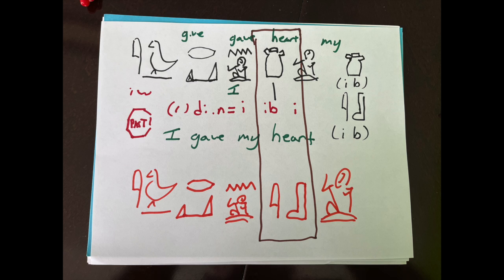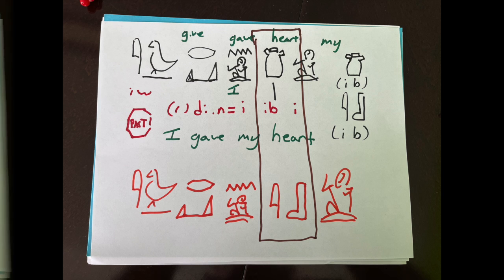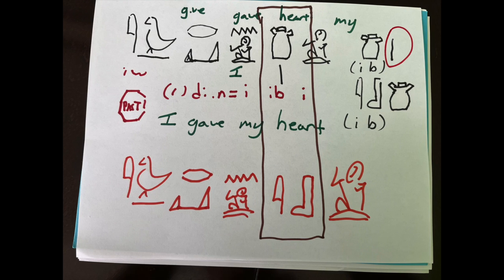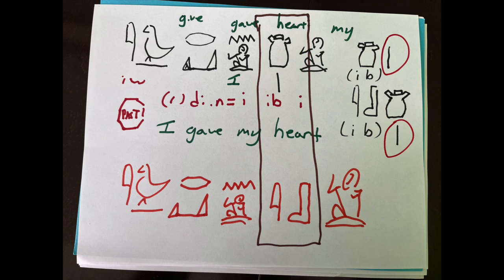When you're doing an ideogram, you're going to have that stroke mark under it. If you're spelling it out, you can also include the ideogram as a determinative to reinforce what it is you're reading—that the ib is ib heart and not a different ib. So that's one way that determinatives and ideograms tend to cross, because they can be used for both. Ideograms can be determinatives.